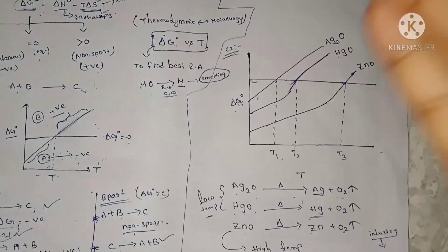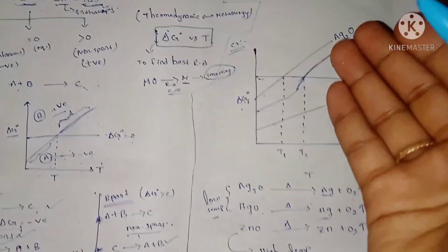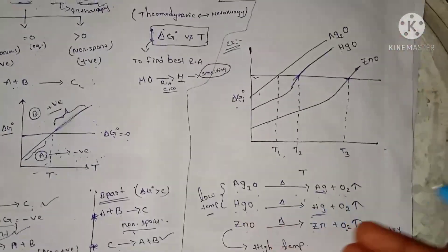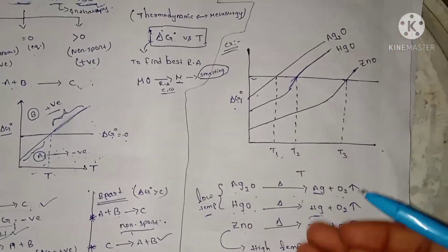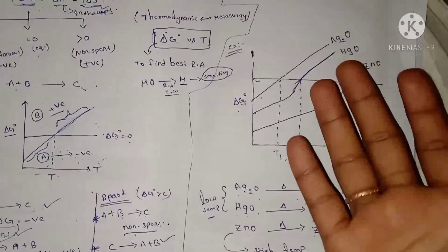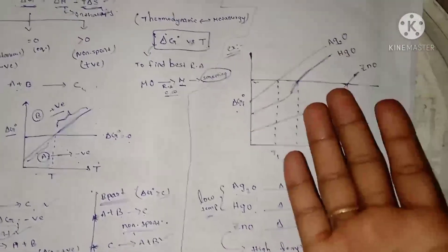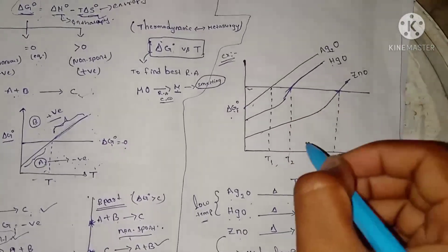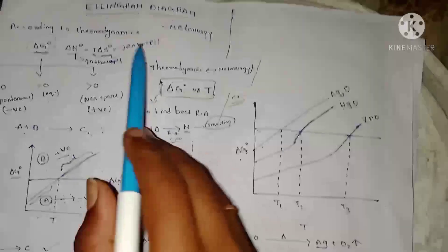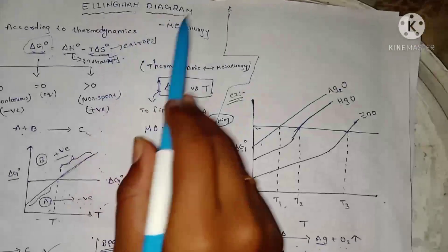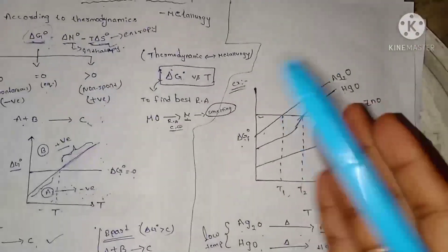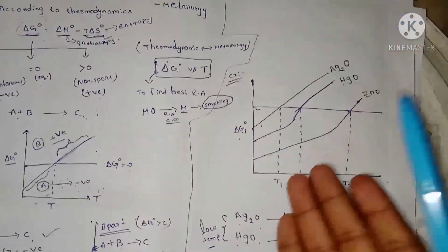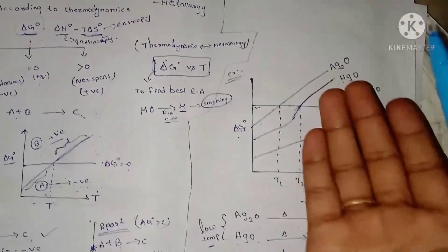We need to determine what reducing agent is better. This is better done if we use the Ellingham diagram to find the best reducing agent.